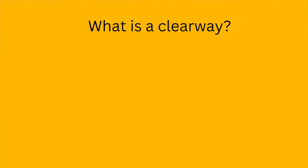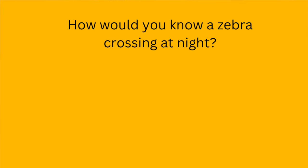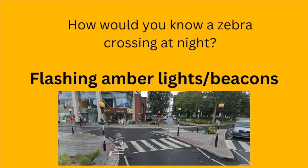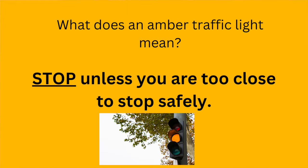Next: what is a clearway? No parking or stopping during the time shown — the area must be kept clear for moving traffic. How would you know a zebra crossing at night? Because of the flashing amber lights and beacons. Next question: what does an amber traffic light mean? This means you must stop unless you are too close to stop safely.